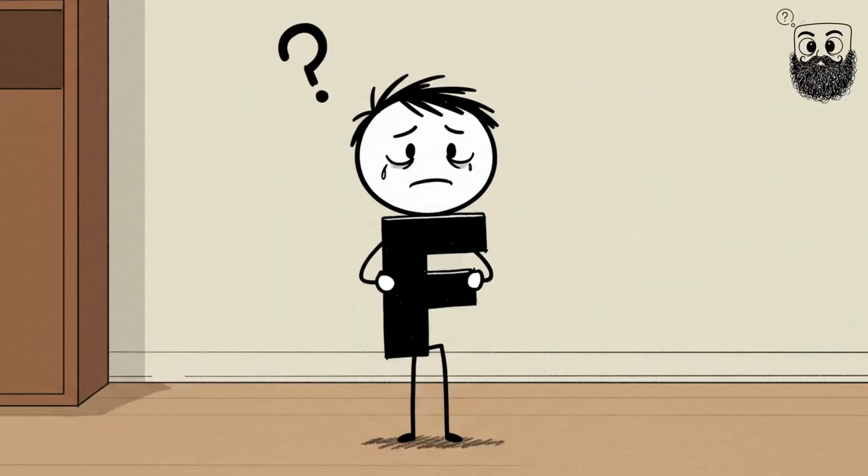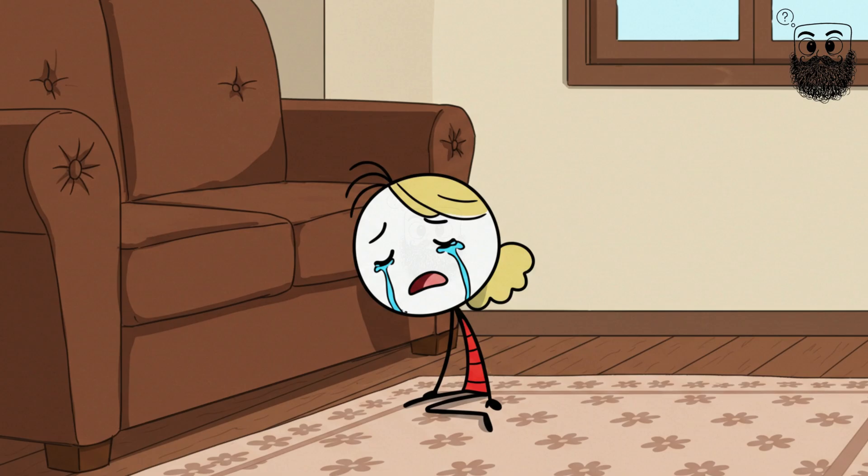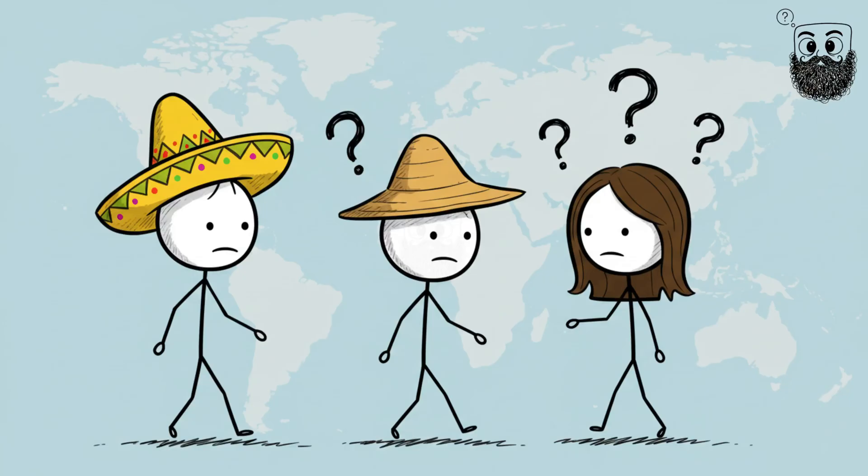Your brain knows the word exists. It knows the meaning. You might even know the first letter, how many syllables it has, or words that sound similar. But the actual word stays hidden, like a remote behind the couch.